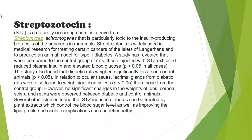Streptozotocin is a naturally occurring chemical derived from Streptomyces achromogenes. It is particularly toxic to the insulin-producing beta cells of the pancreas in mammals. It is widely used in medical research for treating certain cancers and to produce an animal model for type 1 diabetes.